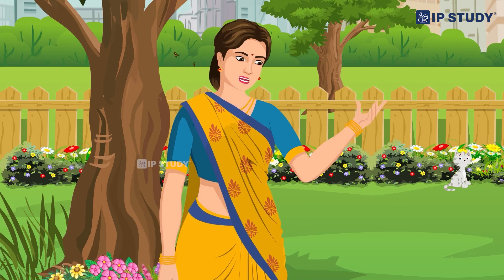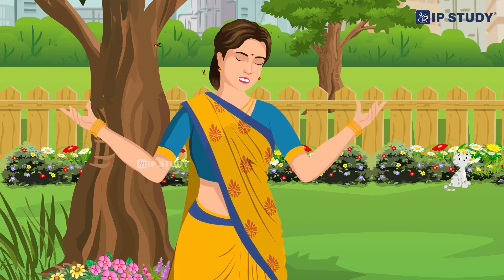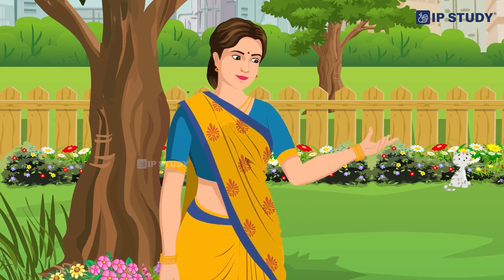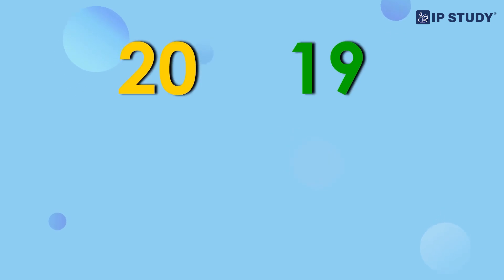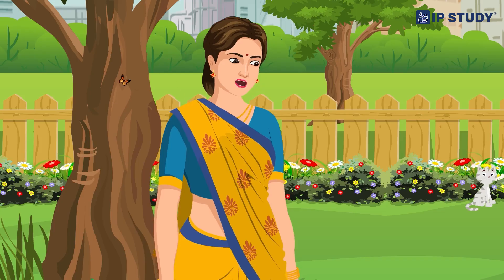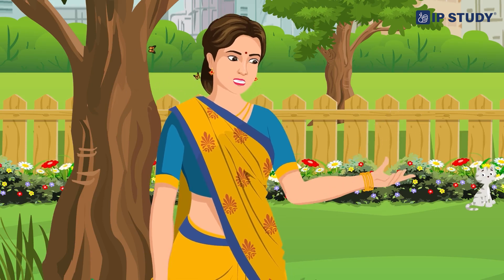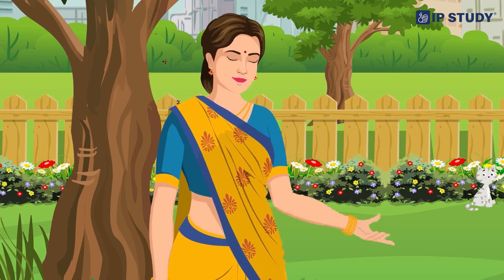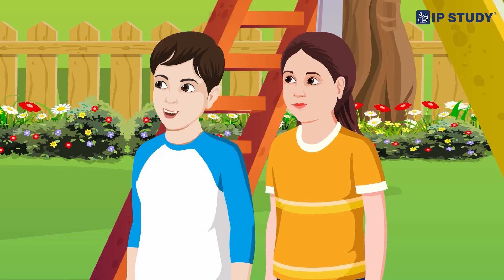Perfect! You are both doing so well. Remember, we can also count from biggest to smallest — like 20, 19, 18, 17. Exactly! You are both becoming number experts. Shall we get ice cream to celebrate? Yes, please!